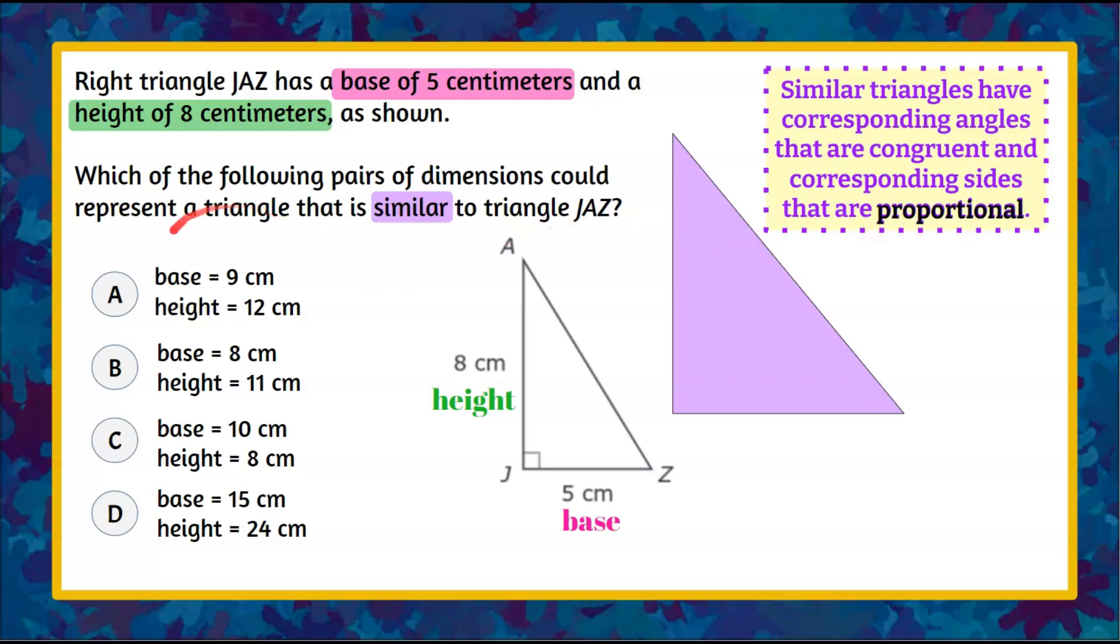So let's take answer choice A and use base of 9 centimeters so it would increase from a base of 5 and the other triangle would have a base that's 9 centimeters. And then a height from 8 would increase to 12 centimeters. And now we need to determine if these are similar triangles.